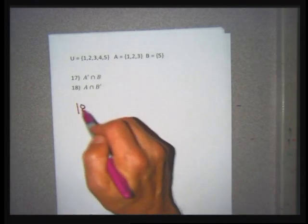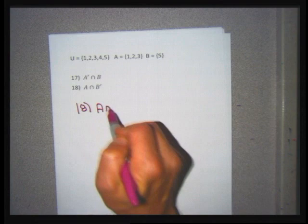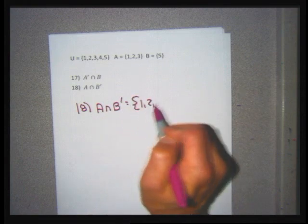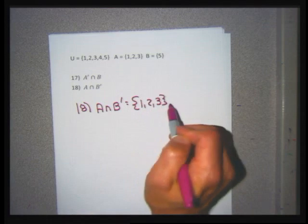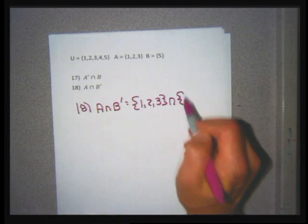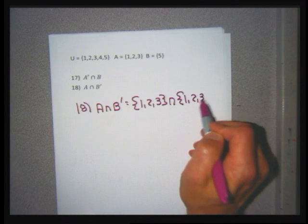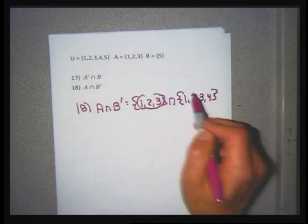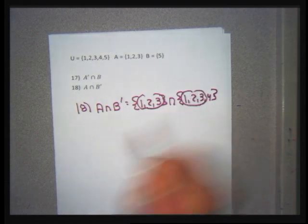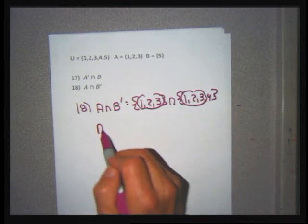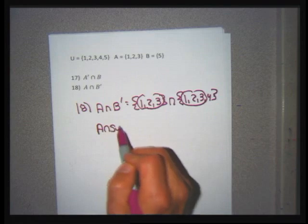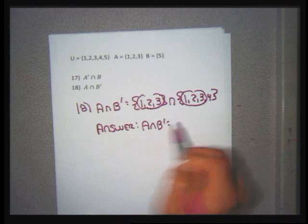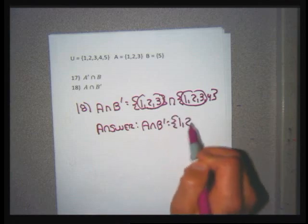Problem 18: A intersection B'. Set A = {1, 2, 3} and B' = {1, 2, 3, 4}. These two sets both have 1, 2, 3 in common. So A intersection B' prime is the set {1, 2, 3}.